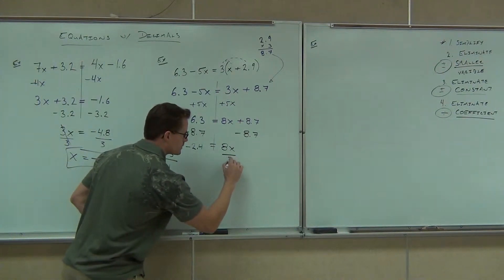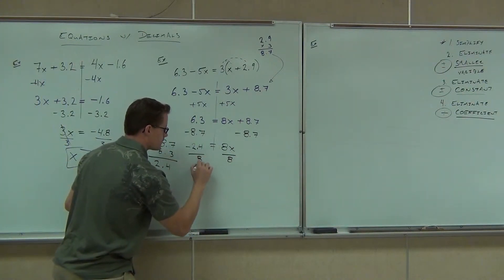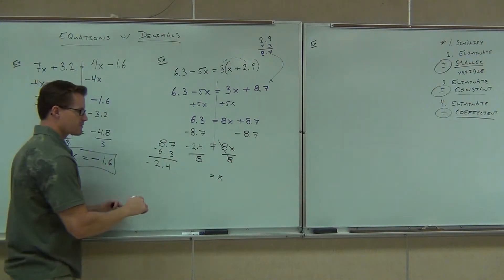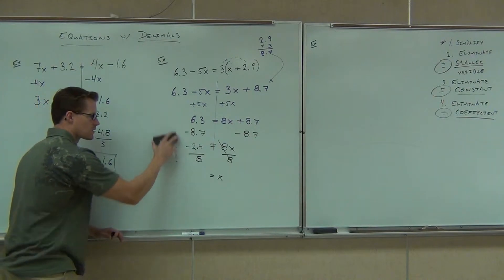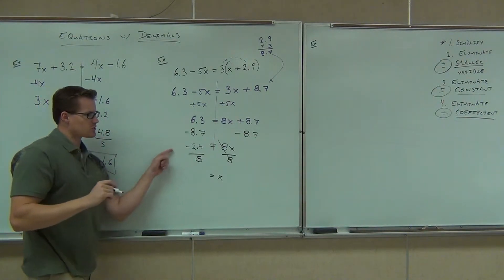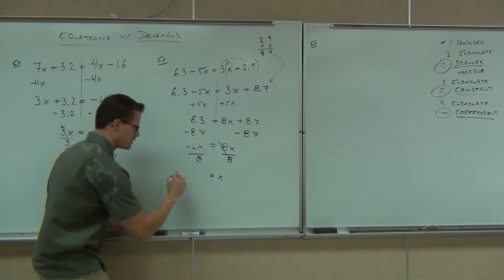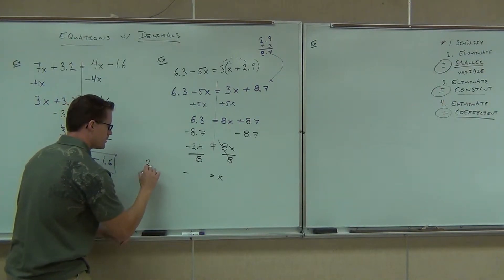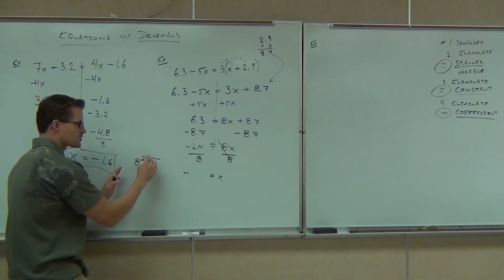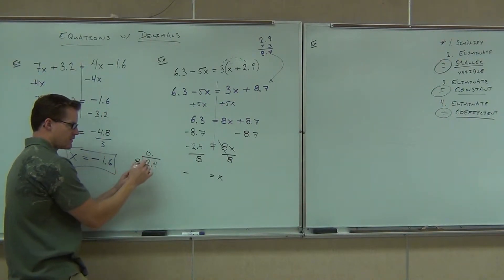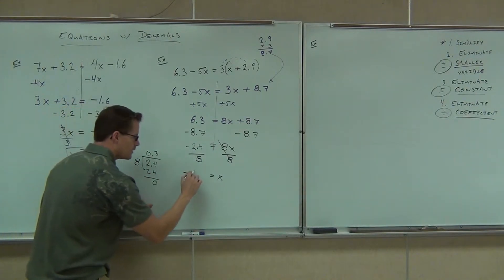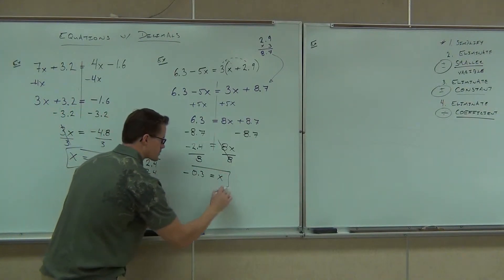And lastly, we'll divide by 8. If we divide by 8, we're going to do that off to the side. We'll do negative 2.4 divided by 8. Is our answer going to be positive or negative? I don't need to move any decimal places. We have a 0, then we have a 3 — so 0.3 is our answer.